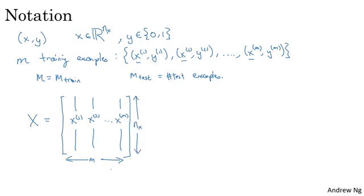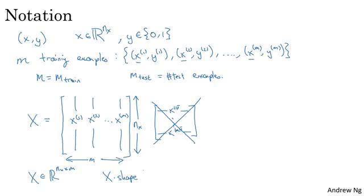Notice that in other courses, you might see the matrix capital X defined by stacking up the training examples in rows, like so, x1 transpose, down to xm transpose. But it turns out that when you're implementing neural networks, using this convention I have on the left, will make the implementation much easier. So just to recap, X is a nx by m dimensional matrix, and when you implement this in Python, you'll see that x.shape, that's the Python command for finding the shape of a matrix, that this is (nx, m), this just means it's an nx by m dimensional matrix. So that's how you group the training examples input x into a matrix.